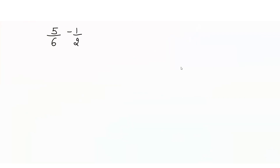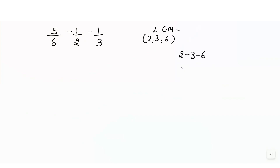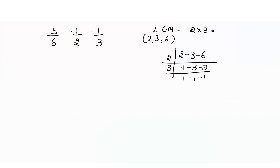Now let's take an example of subtraction with 3 fractions: 5 over 6 minus 1 over 2 minus 1 over 3. Since the denominators are different, we have to find the LCM of 2, 3, and 6. Using prime factorization: 2, 1s are 2, then 3, then 3. Dividing with 3: 1, 1 and 1. So the LCM is 2 × 3, which equals 6.